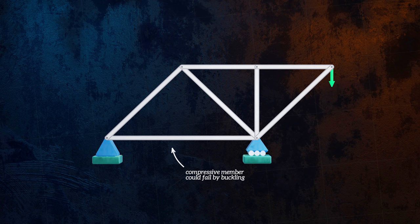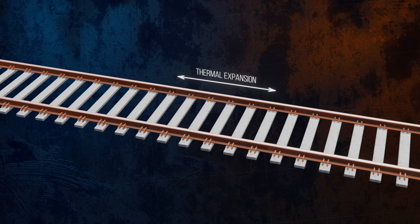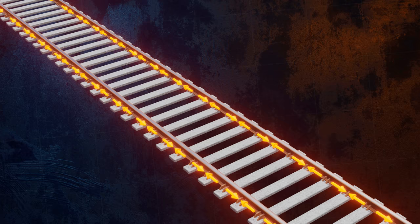There are other less obvious examples too. When railway tracks heat up on a hot day, the steel the tracks are made of tends to expand. But expansion in the axial direction is prevented, and so a compressive axial force builds up, which can lead to buckling.